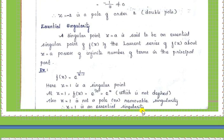So these are all the types of singularities. A singular point means after substituting a particular point in f of z we get an infinite value. Thank you.